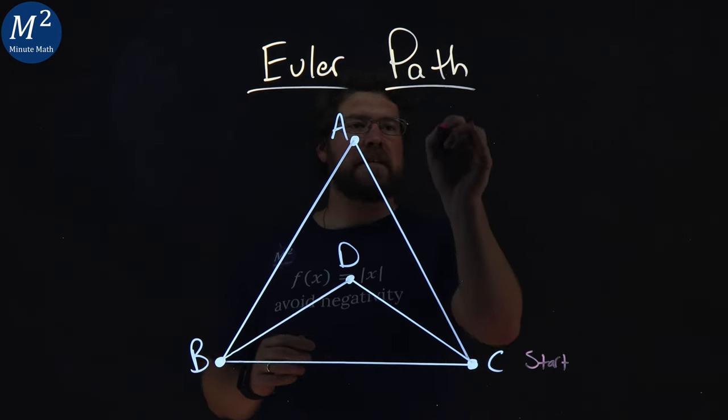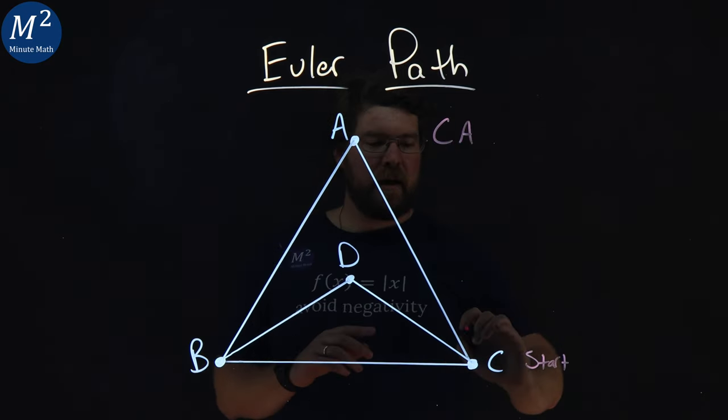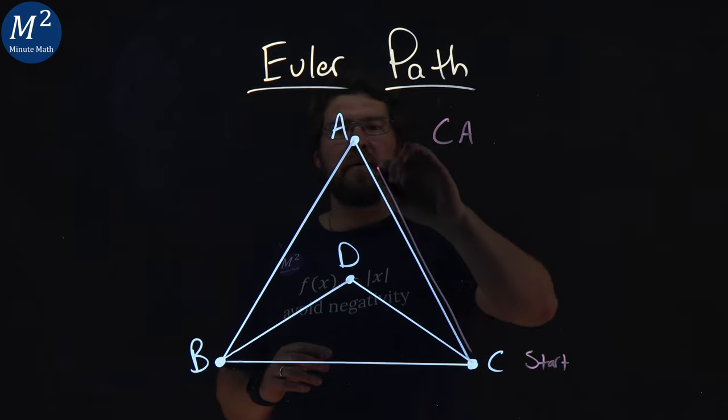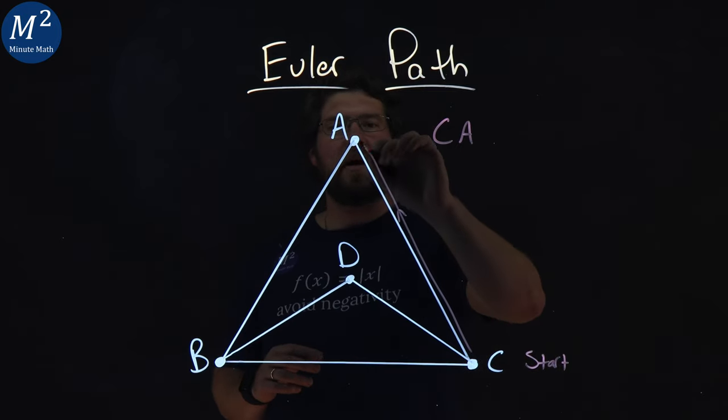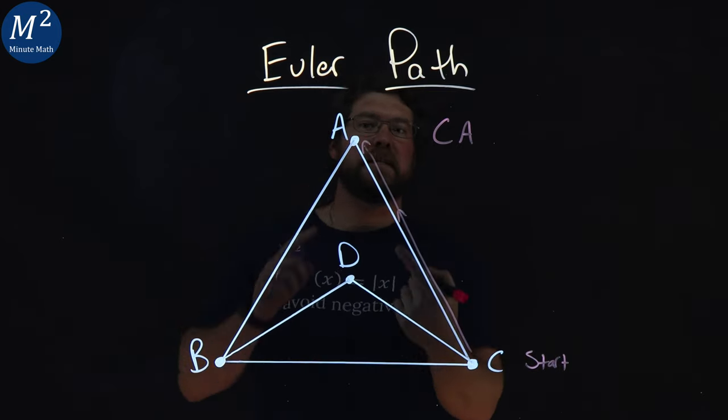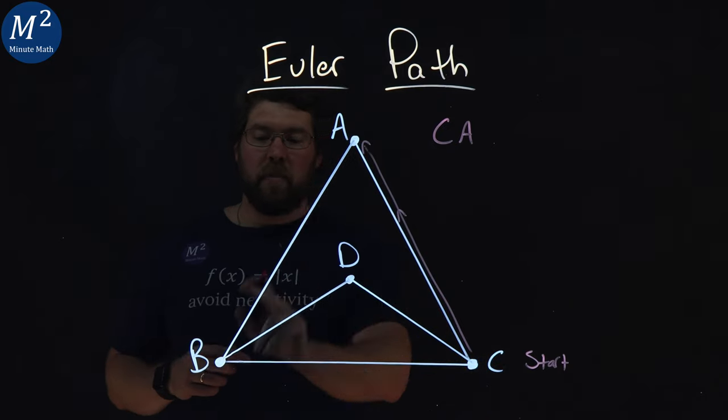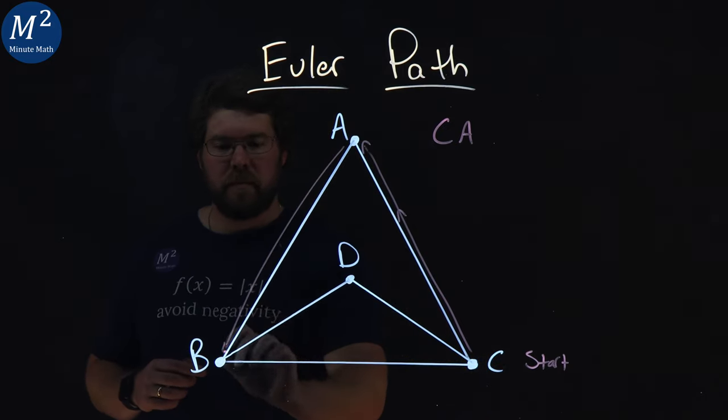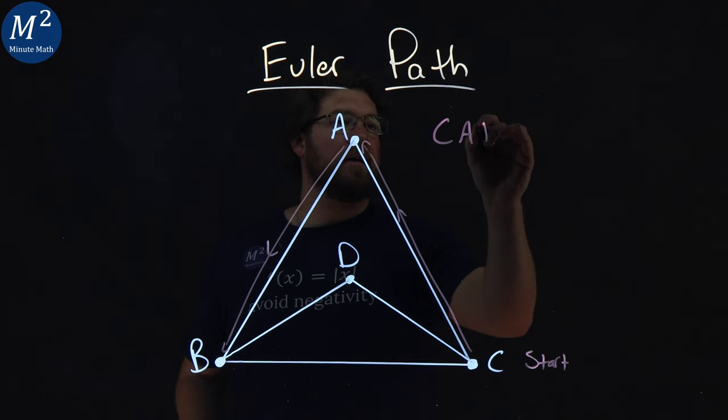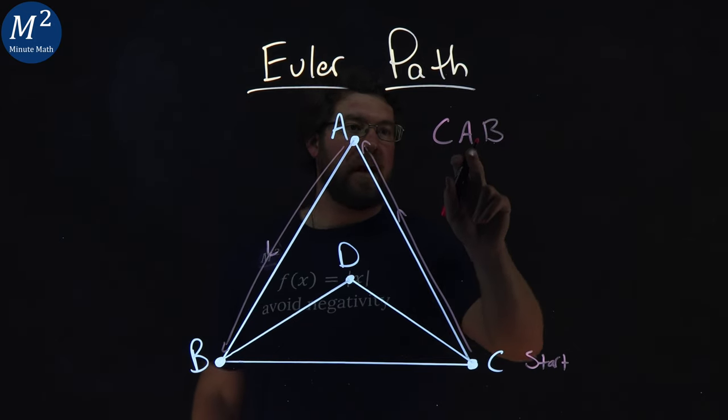So if we go from C to A, we can label that going from C to A right here. You can put little arrows if you want. So I'm going from C to A. Then we go from A to B, and we can label our path as such. We're going from C to A to B.